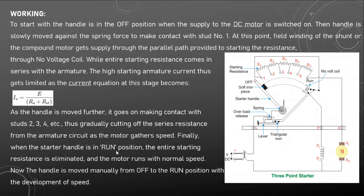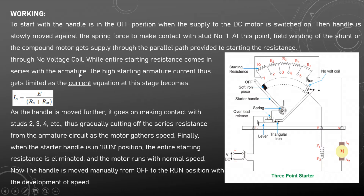Now for the working of the three-point starter: initially the handle is in the off position when supply is switched on. The handle is slowly moved against the spring force to make contact with stud number one. At this point, the field winding of the shunt or compound motor gets supplied through the parallel path provided through the starting resistance and through the no voltage coil.